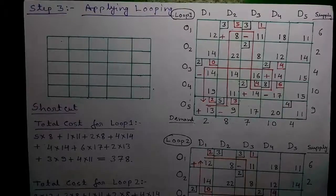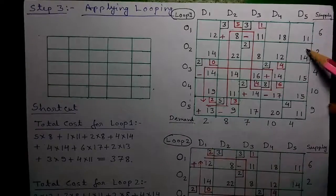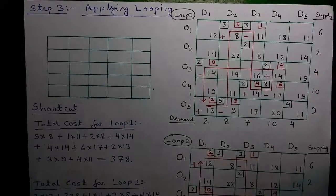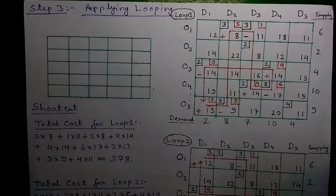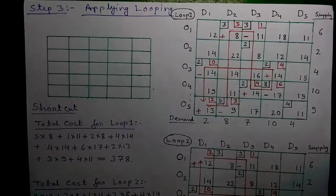Hello everyone, I am Sujoy and this is another video on the Operations Research subject. This is Part 3 of the video where I am explaining how to solve a 5x5 transportation problem using the MODI method, or the Modified Distribution Method. In Part 1, I covered the initial basic feasible solution, degeneracy check, opportunity cost calculation, and optimality test for both occupied and unoccupied cells, all explained in Parts 1 and 2.